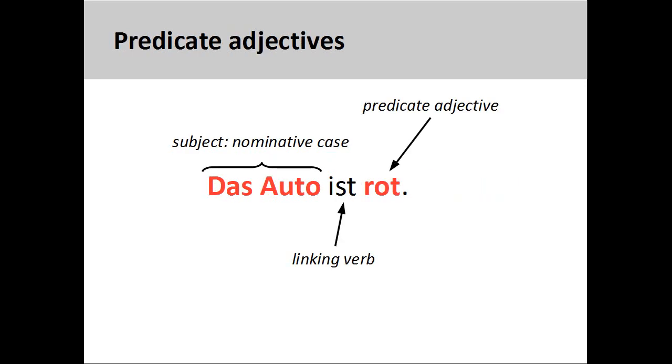Predicate adjectives are also in the nominative case. Predicate adjectives are simply adjectives that appear after a linking verb in a sentence and, in essence, provide more information about the subject.